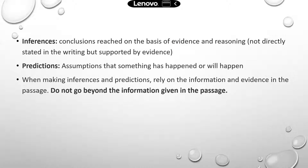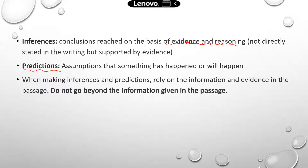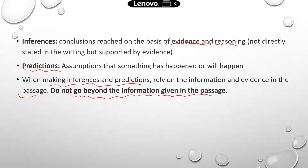Just a quick refresher on definitions we mentioned before. Inferences are conclusions you reach based on evidence and logical reasoning. Usually these conclusions are not directly stated in the writing, but you need to make inferences based on evidence from the writing and logical reasoning. Second, predictions are assumptions that something has happened or will happen. To make predictions, you also need to rely on the information provided in the writing. When you make inferences and predictions, make sure you only base those on what's available in the passage — don't go beyond the information provided.